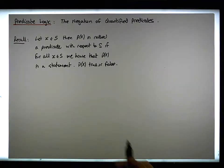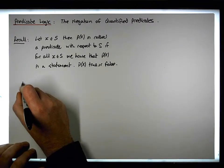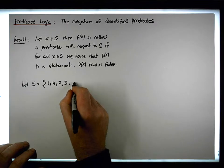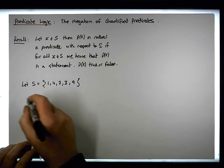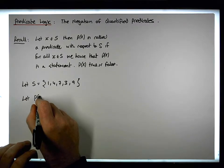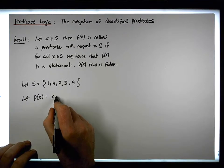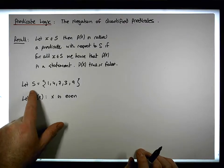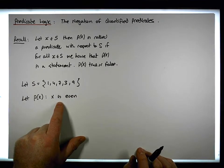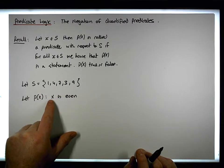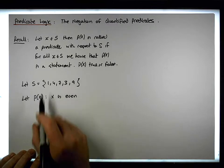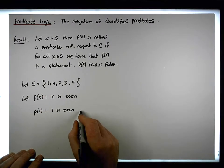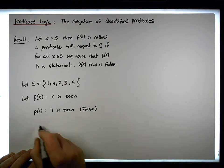Let's look at some examples. Let S equal the set containing the values 1, 4, 7, 3, and 9. And let P(x) be the statement that x is even. This statement is either true or false depending on the value x takes on. For example, P(1) is now the statement that 1 is even, which happens to be false.